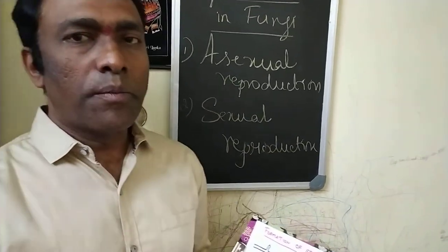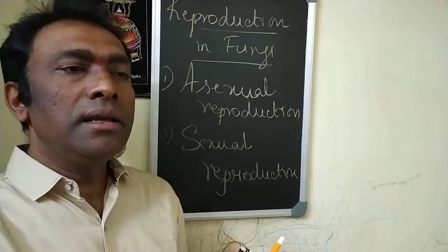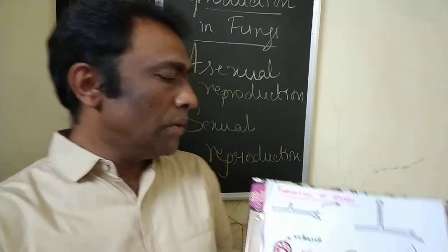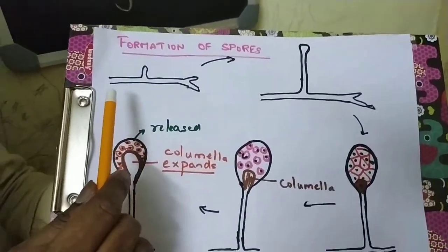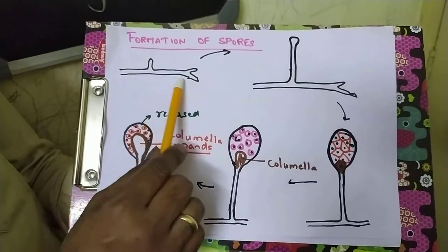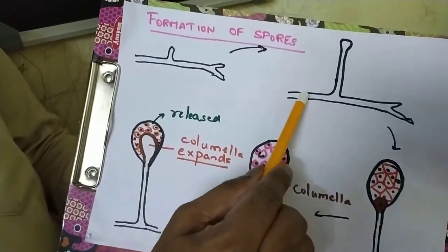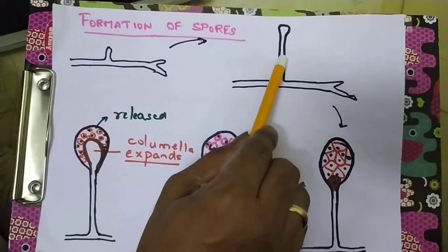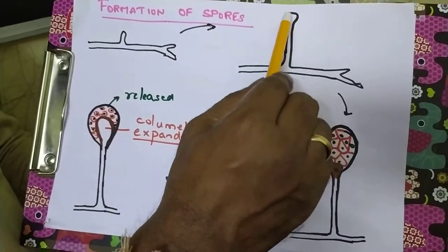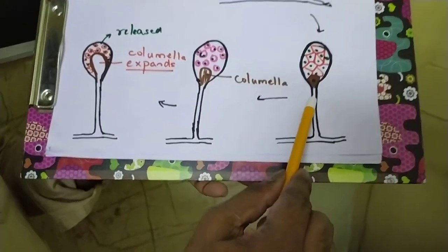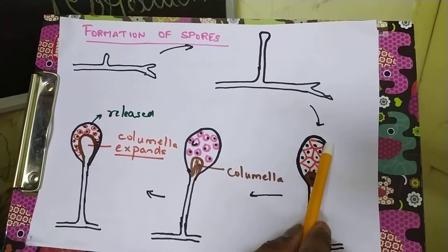We will be continuing with the asexual reproduction part. Other than fragmentation, budding, arthrospore formation, etc., we have the formation of spores. There is a coenocytic mycelium and development of aerial mycelium. The contents of the cytoplasm will move through this structure called the sporangiophore, and the sporangium is going to be developed. The sporangiophore extends and gives a very huge vesicular structure.